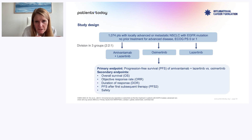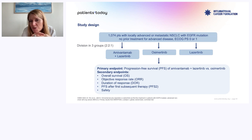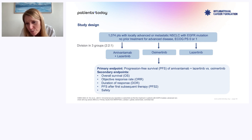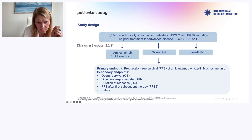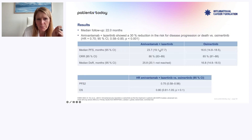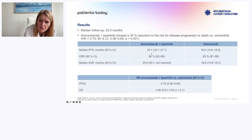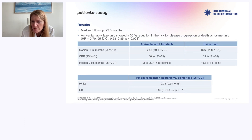This is the MARIPOSA-1 trial: amivantamab-lazertinib versus osimertinib — about 1,000 patients. For regulatory purposes, one patient out of five was randomized to lazertinib only to establish its contribution. The primary endpoint was progression-free survival. There is an improvement: the PFS improves to 24 months for the combination versus 17 months for osimertinib. Response rate is unchanged, but duration of response is improved by about 10 months. The hazard ratio is 0.7, reducing the risk of relapse by 30%.